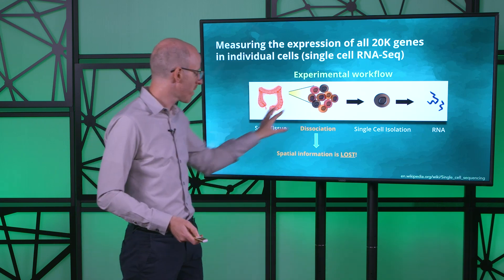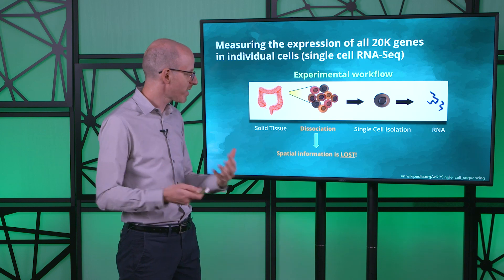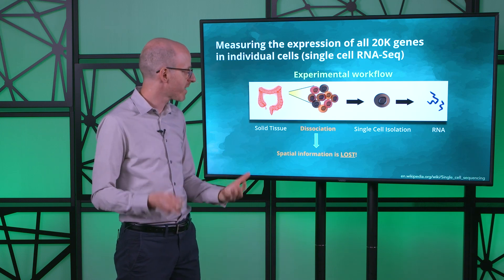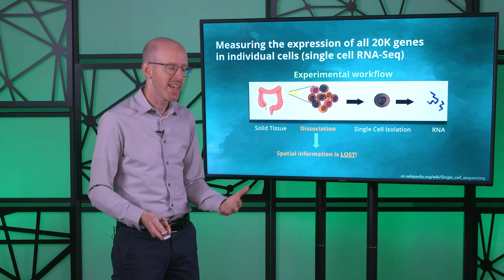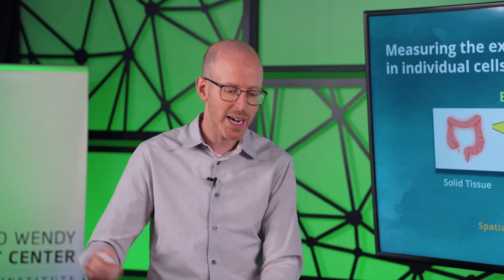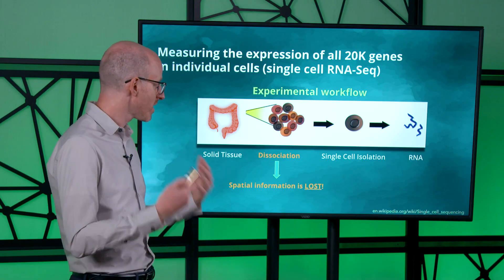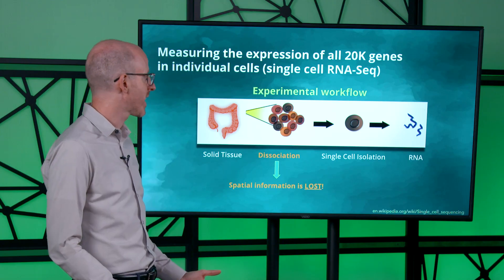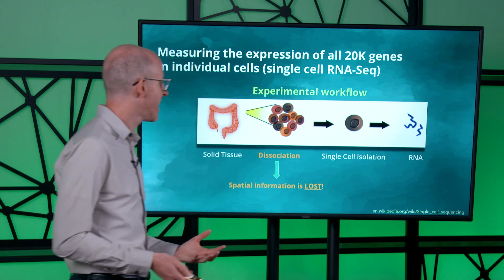That's one really important thing to remember: single-cell transcriptomics, or single-cell RNA sequencing, does not give you any spatial information. That's actually what spurred some of the developments in spatial transcriptomics — people wanted to know where the cells are in the tissue. But single-cell RNA sequencing is still a very powerful technology, because we're measuring all 20,000 genes in the cell.